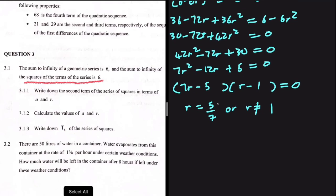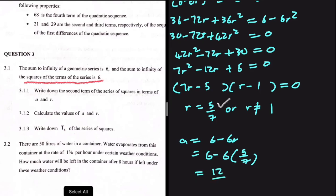Now we can find the value of A. We know A equals 6 minus 6R, so A equals 6 minus 6 multiplied by 5/7, giving A equals 12/7.